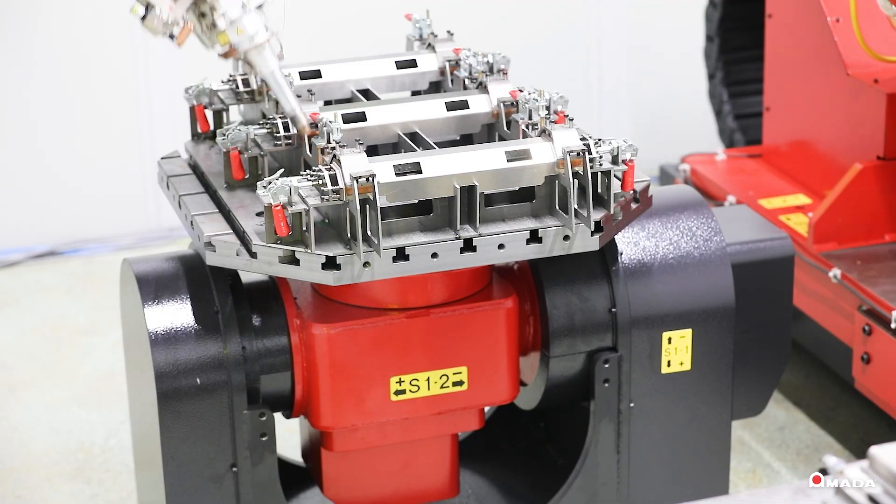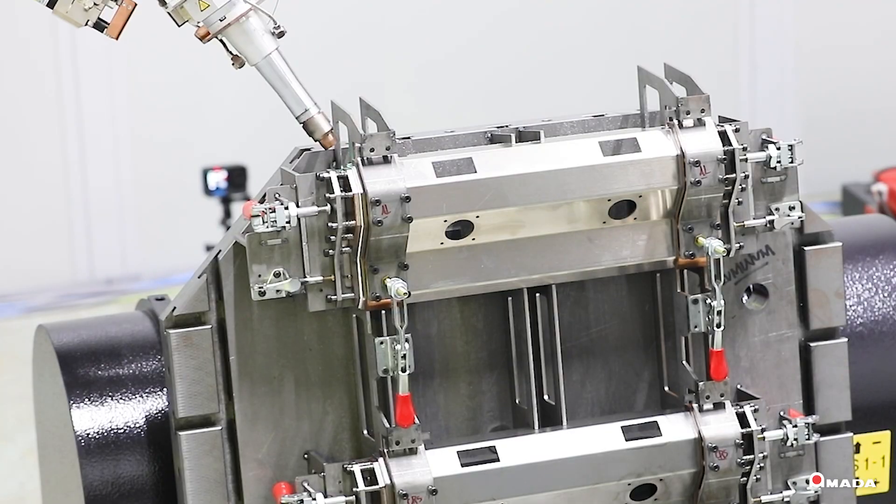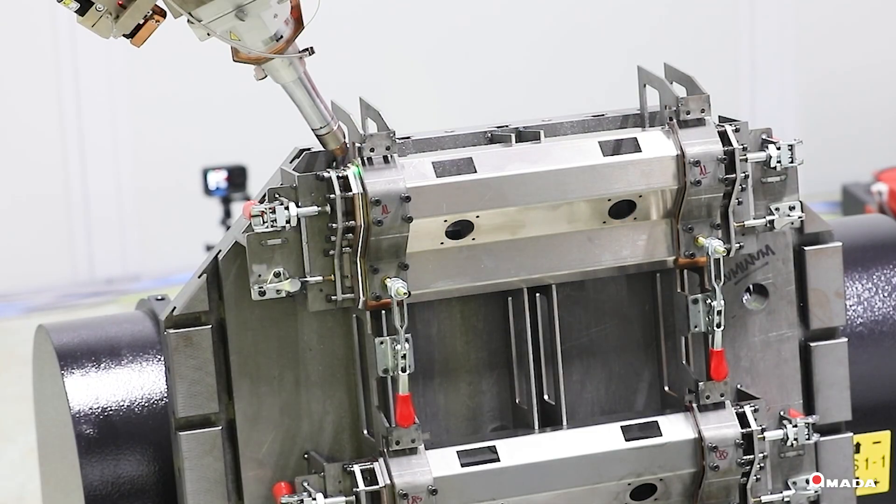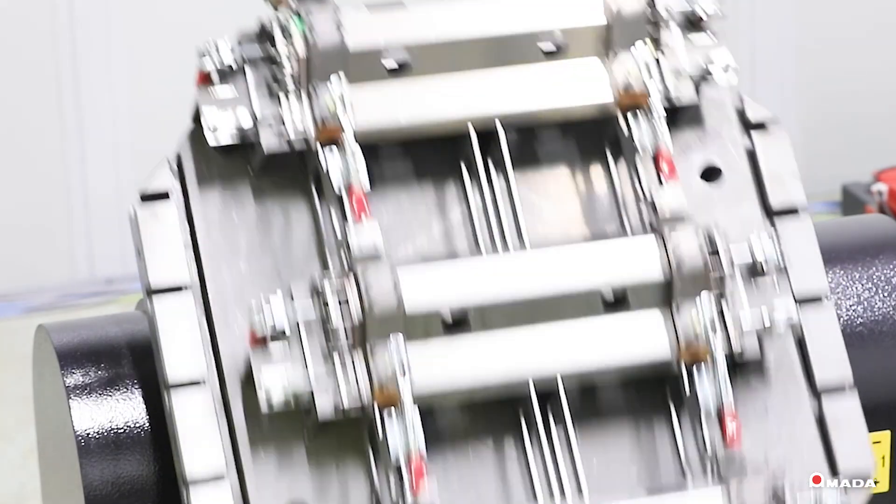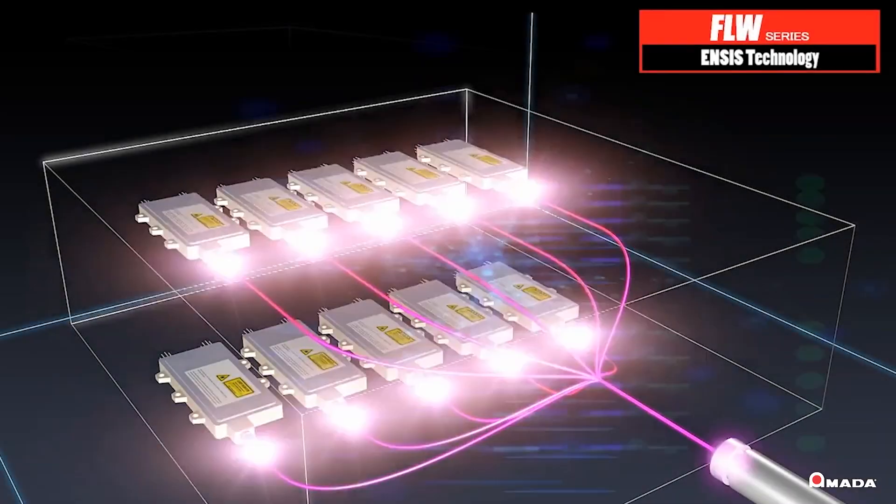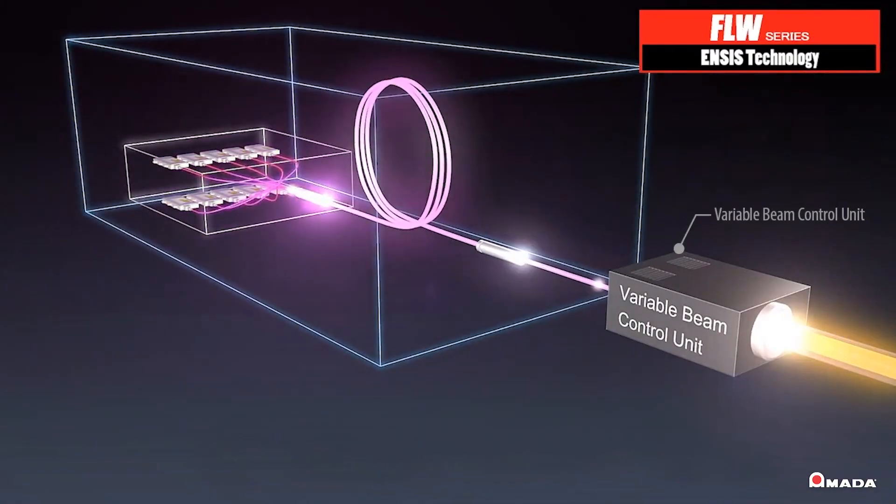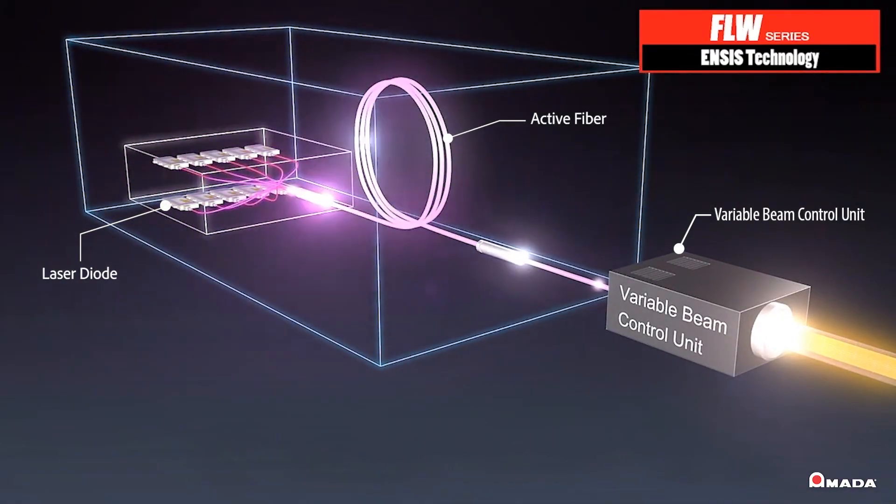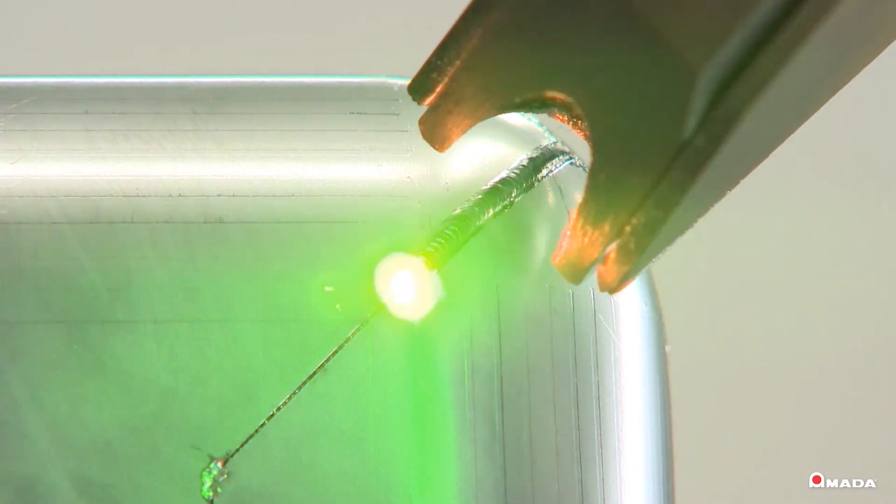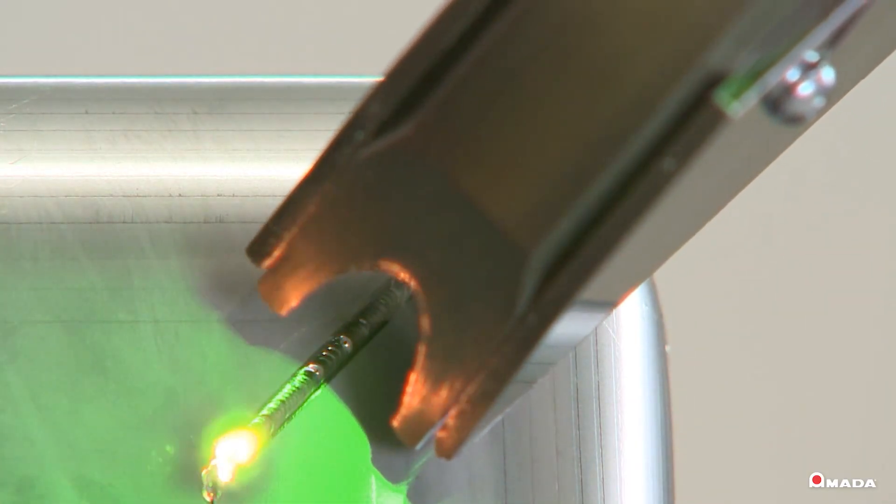The FLW laser takes welding to higher levels of precision and productivity. It takes advantage of Amada's fiber laser technology, which emits a wavelength that is approximately one-tenth of that emitted by a conventional CO2 laser welder. This is what allows the FLW to process materials such as brass and copper.